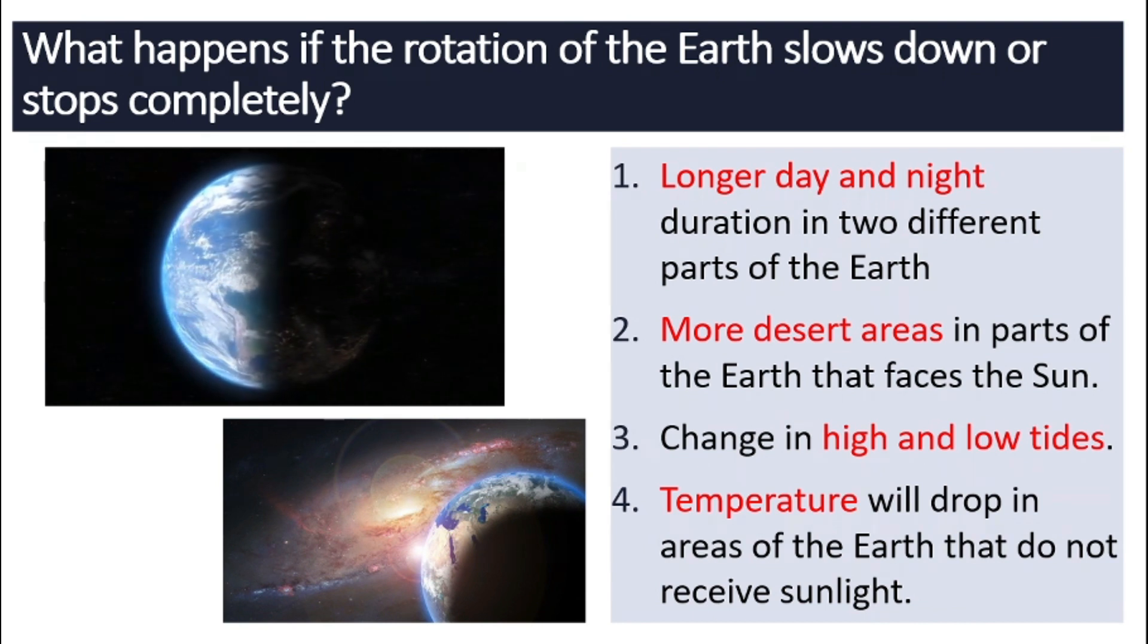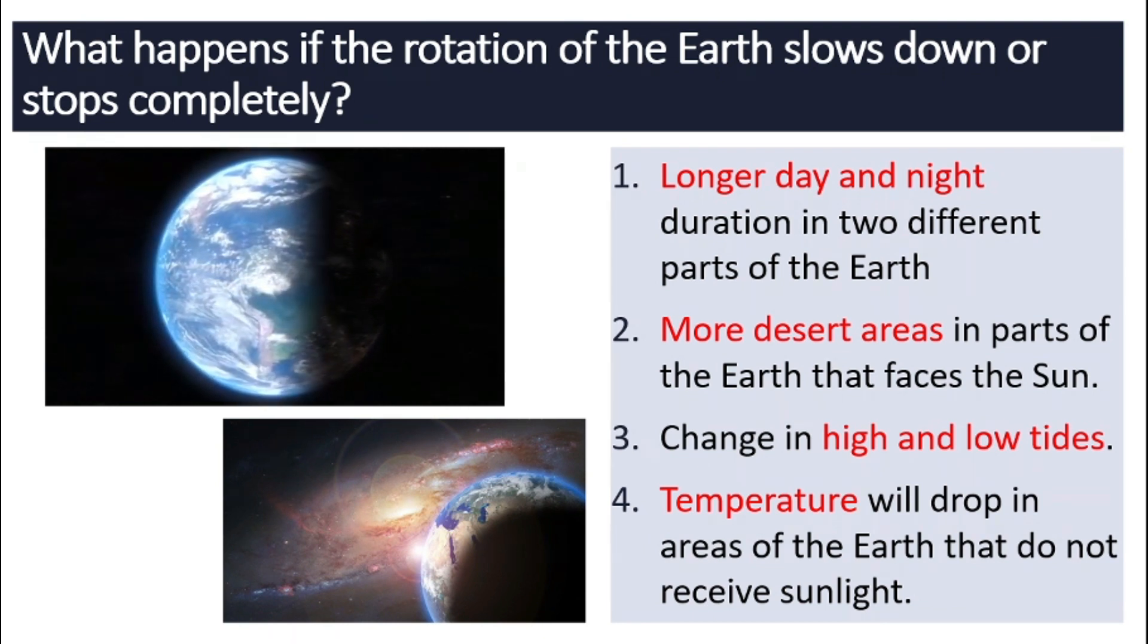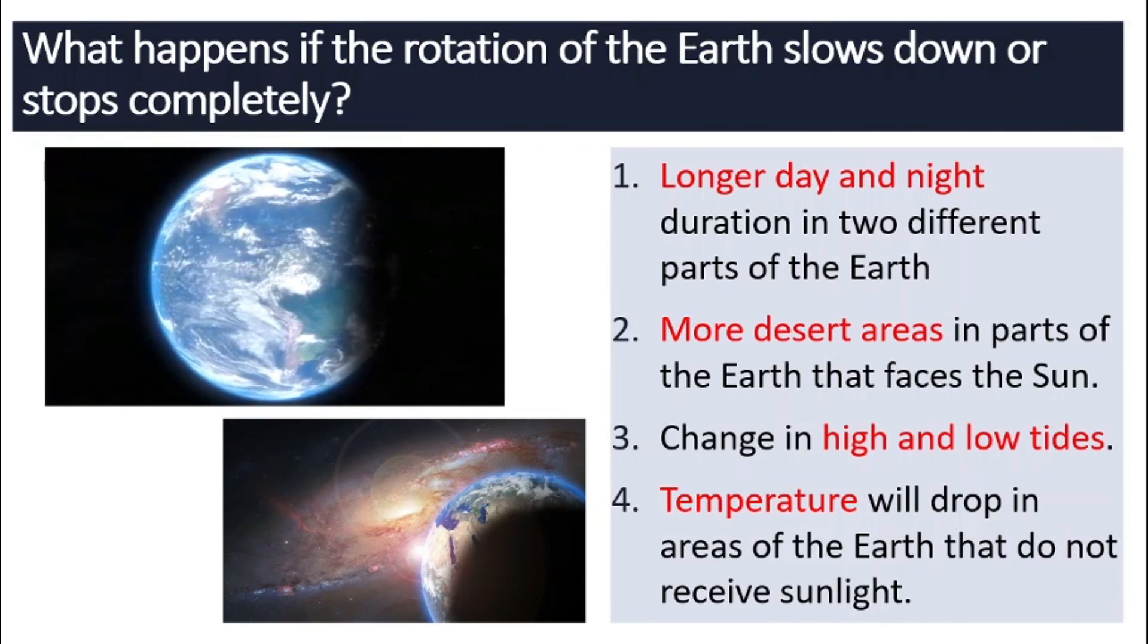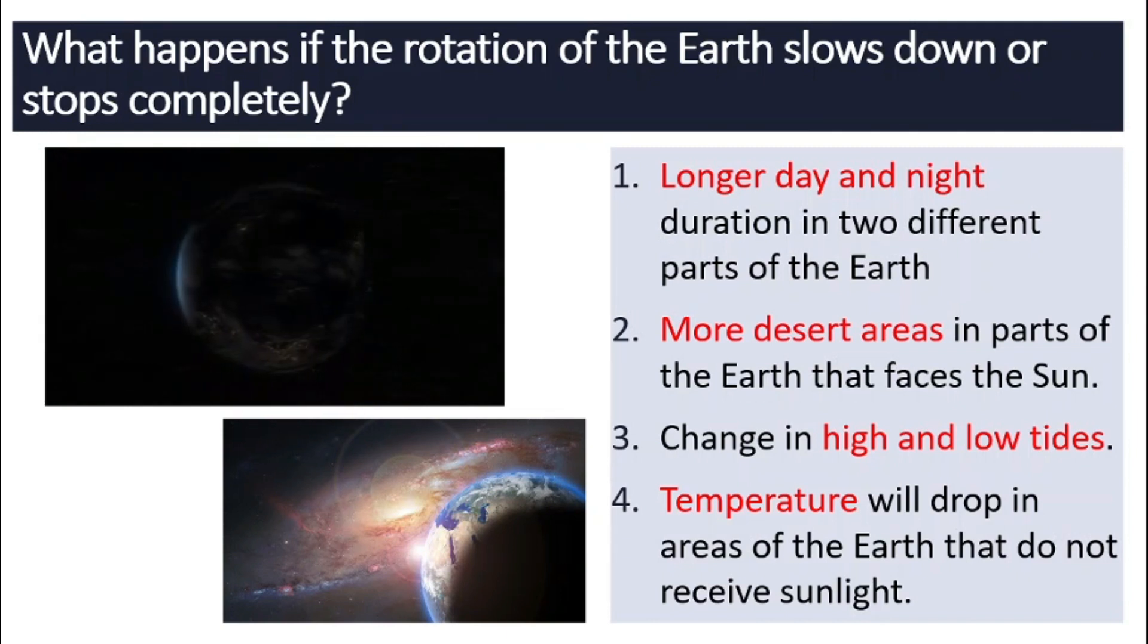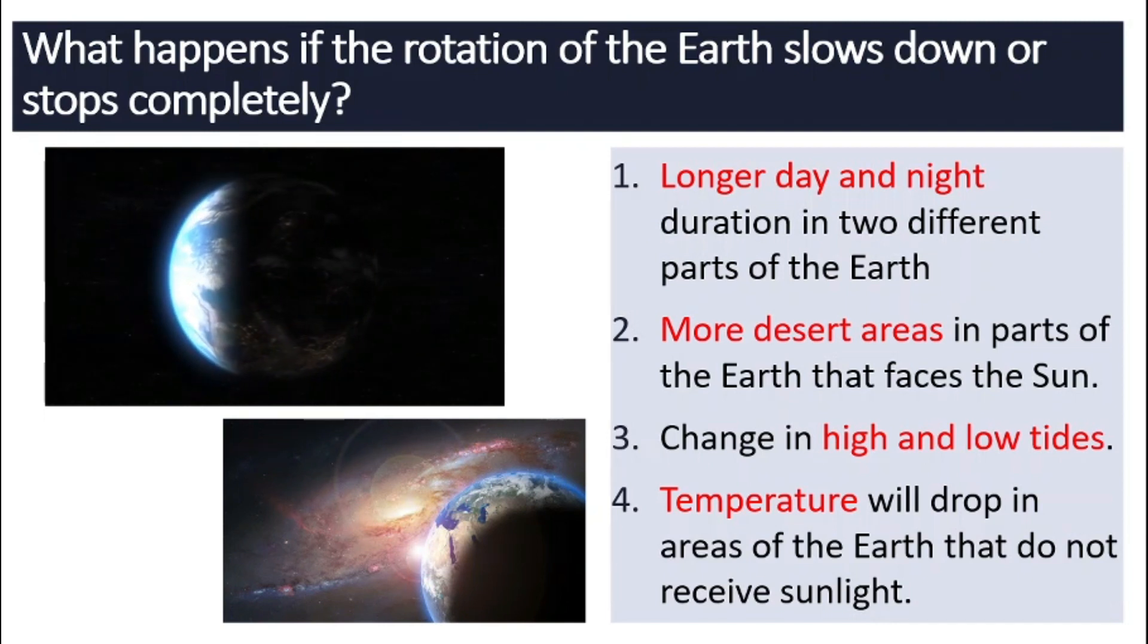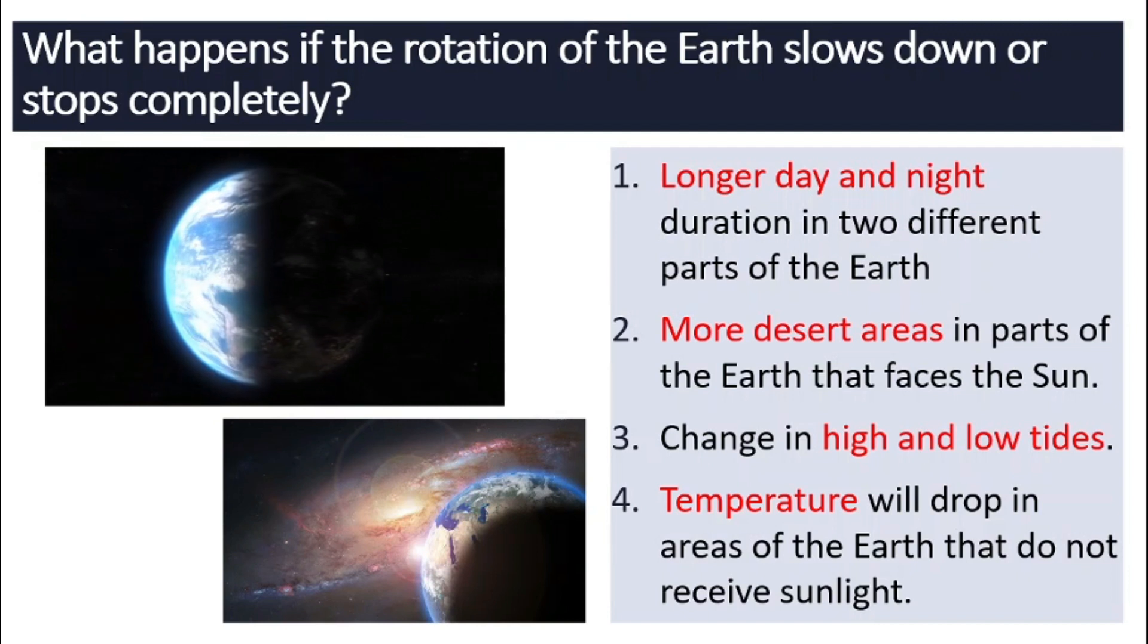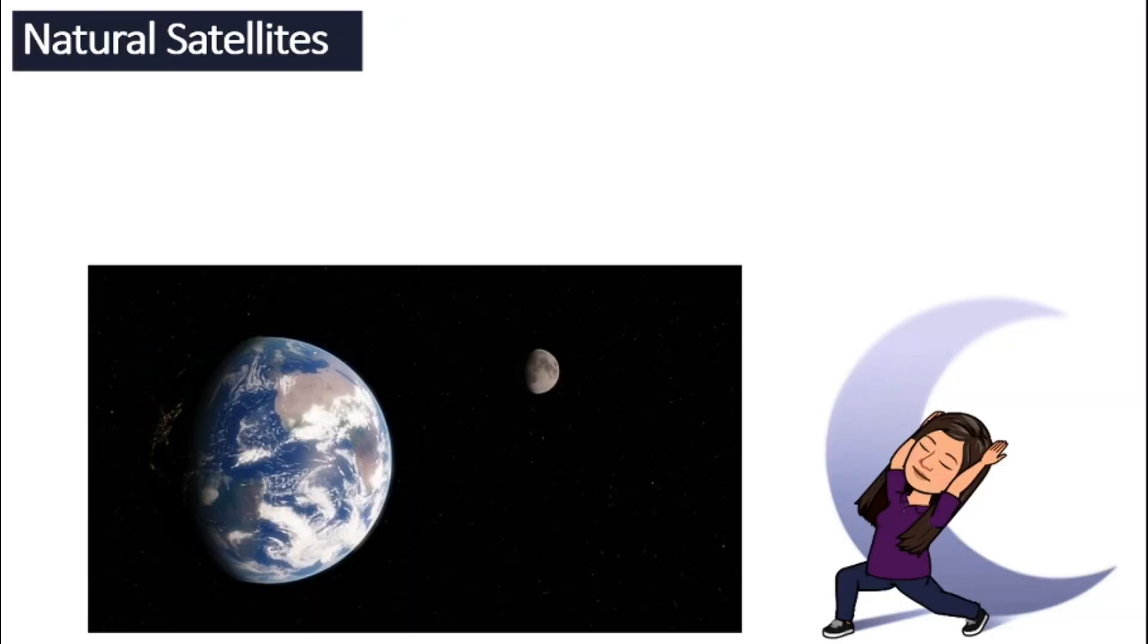And there will be changes in the high and low tides as well. And on the darker sides of the Earth that do not receive that much sunlight, the temperature will drop. In other words, we might have very extreme weather if the Earth stopped rotating completely or even just slowed down in the rotation.